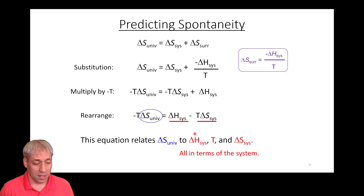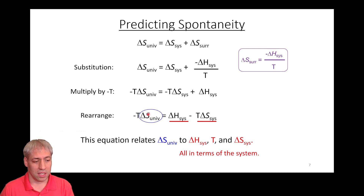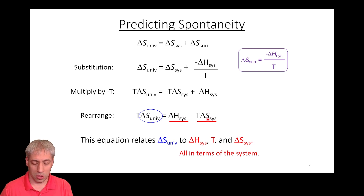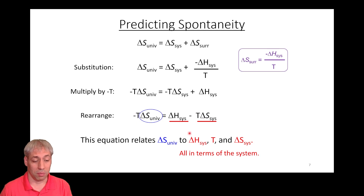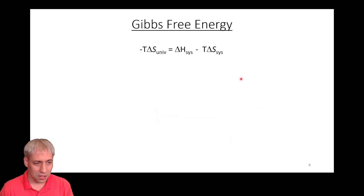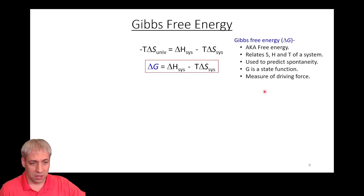What's important here is that we've defined delta S universe — which tells us whether a reaction is spontaneous — entirely in terms of the system: delta H system (exo or endothermic), delta S system (from standard entropy), and temperature (which we can measure). The person who originally did this was Josiah Gibbs, so we call this the Gibbs free energy relationship.